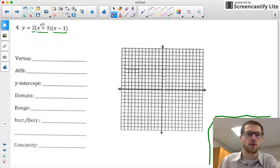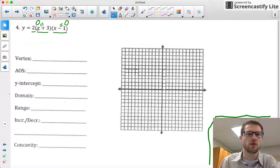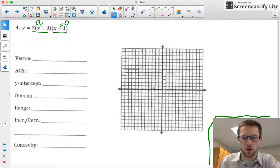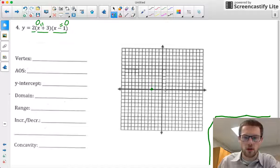To find the roots, we're going to set each one of these factors equal to zero. Whatever will make this factor equal zero will be my root. So when x is -3, this whole factor will equal zero. So here is my first root at (-3, 0). And my second root will be at positive 1, since 1 minus 1 is 0.